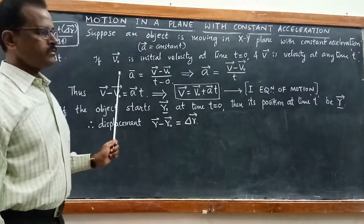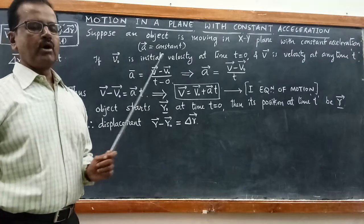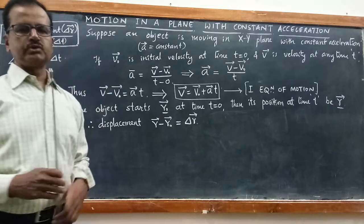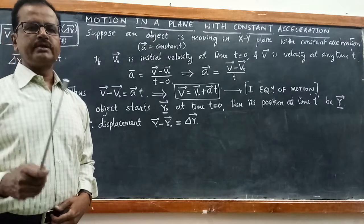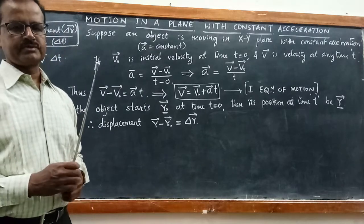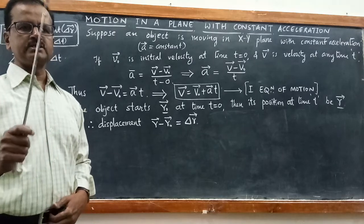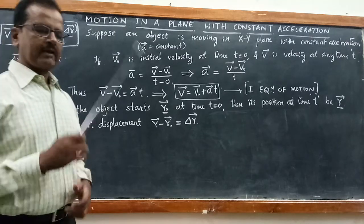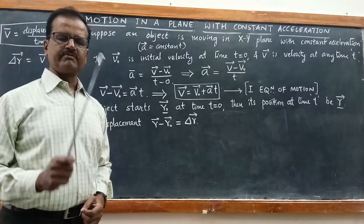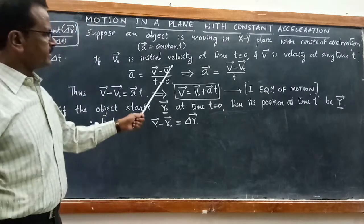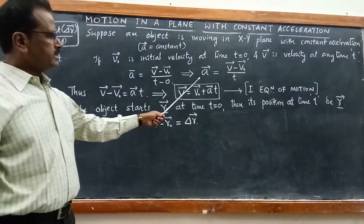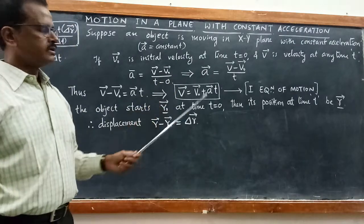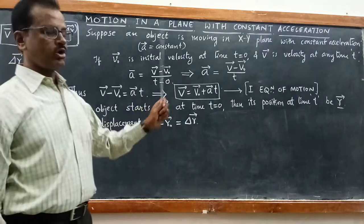We know how to calculate average acceleration: average acceleration equals change in velocity divided by time, that is Δv/Δt. If you calculate average acceleration over the interval, it itself becomes the acceleration, because the acceleration is constant.